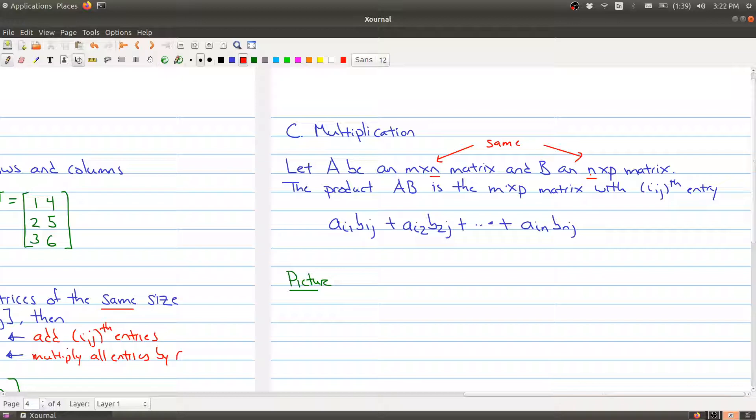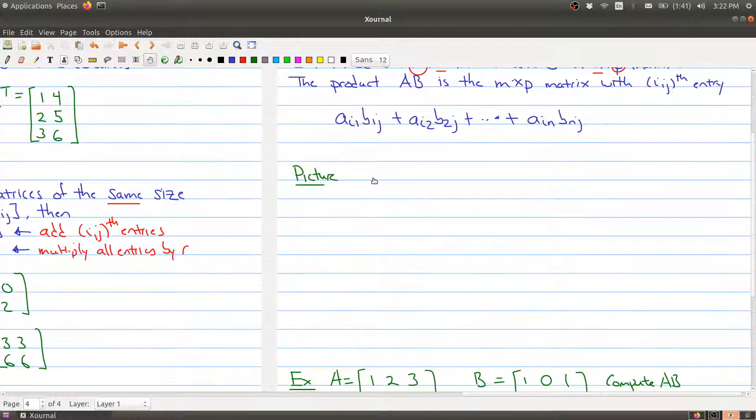Once we have two matrices that satisfy this relationship, we can define the product. The product A times B is now going to be an M by P matrix. So these are this guy right here and this guy right here, that's where the M and P come from, with the ijth entry given by the following form: Ai1 times B1j plus Ai2 times B2j all the way down to AiN times BNj. This formula at first glance is a little hard to visualize.